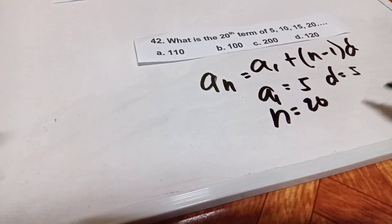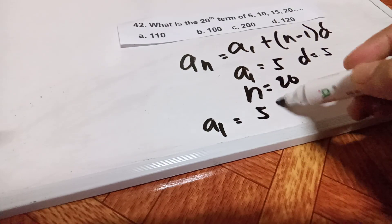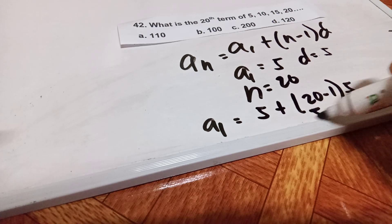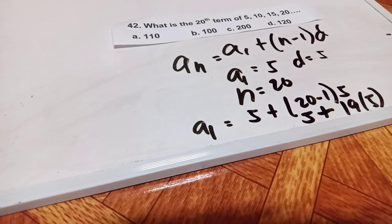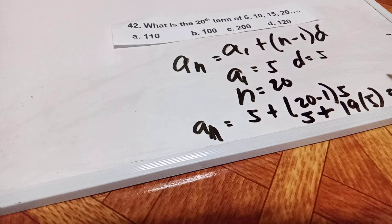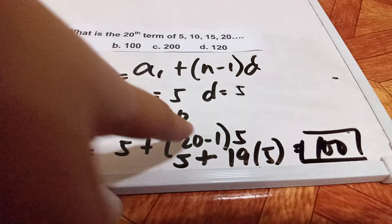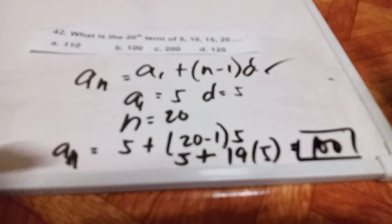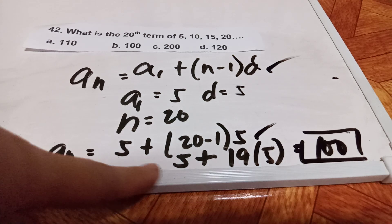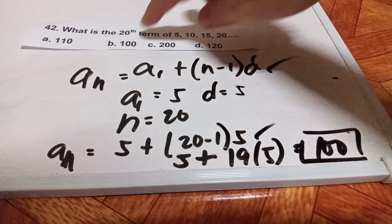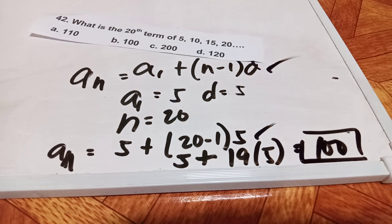Substituting into the formula: A_20 equals 5 plus (20 minus 1) times 5, which is 5 plus 19 times 5. 19 times 5 is 95, and 95 plus 5 is 100. So the answer is letter B — the 20th term is 100. The shortcut method is to simply multiply 5 times 20, which automatically gives 100.